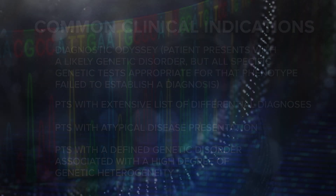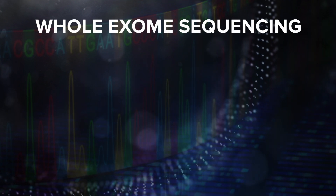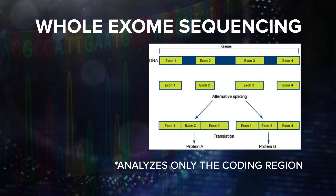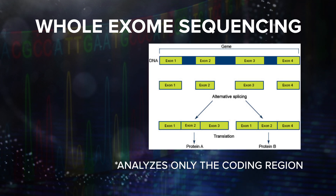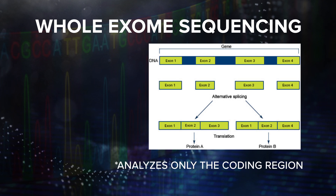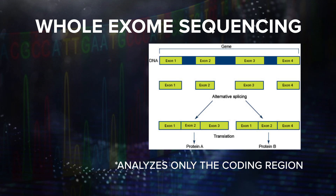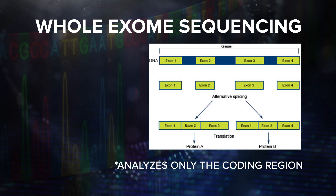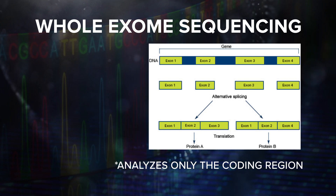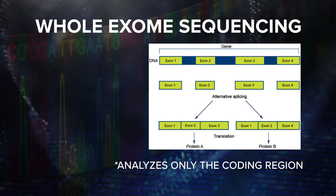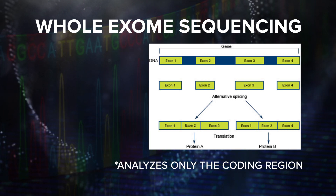Another option is whole exome sequencing, or sequencing of just the exome. Whole exome sequencing captures just the parts of DNA that code for the mature RNA strand. Common clinical indications for whole exome sequencing are similar to those for whole genome sequencing. It is important to keep in mind, however, that whole exome sequencing does not provide any detailed information beyond just the protein coding regions of each gene. To get that information, whole genome sequencing is required.